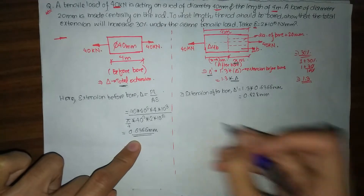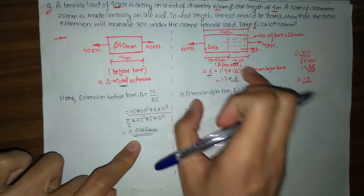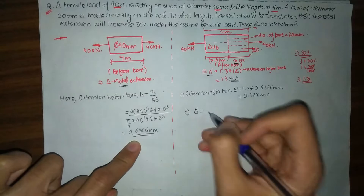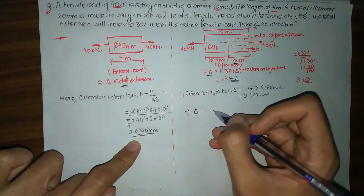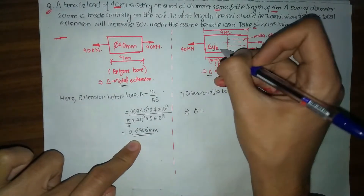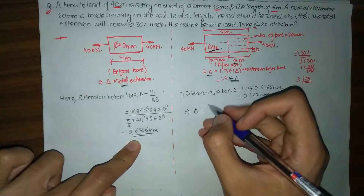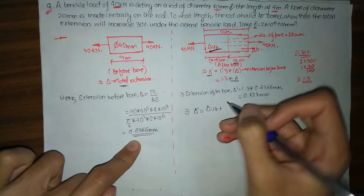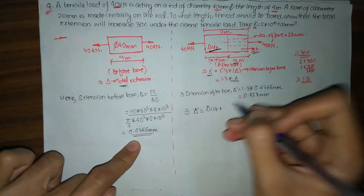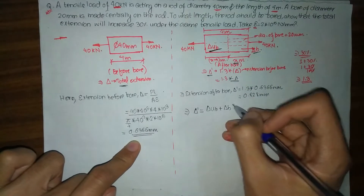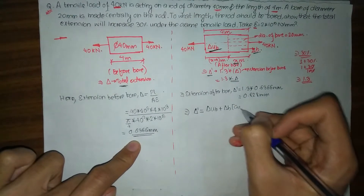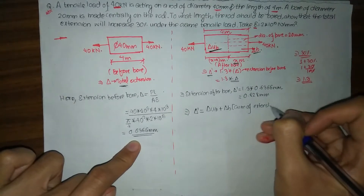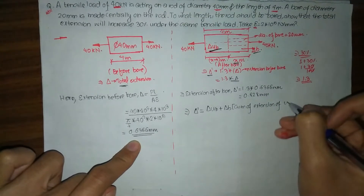Now, the total extension after bore, denoted as del dash, will simply equal the extension of the unbored portion del-UB plus the extension of the bored portion del-B. That is, del dash equals the sum of extensions of the unbored and bored portions. We have our value of del dash as 0.828 mm.